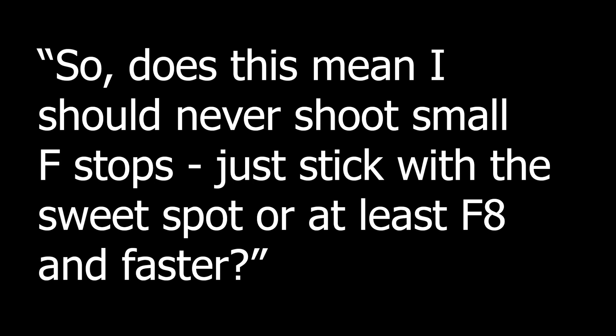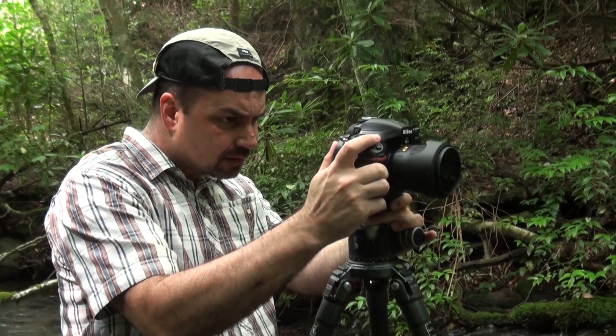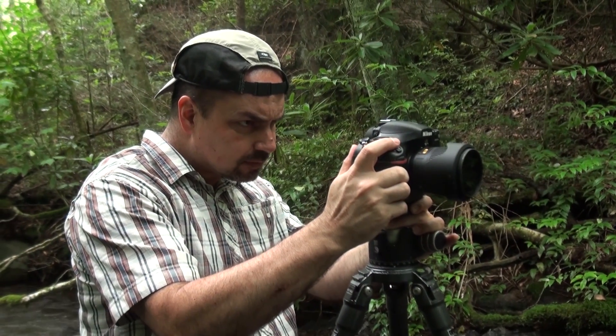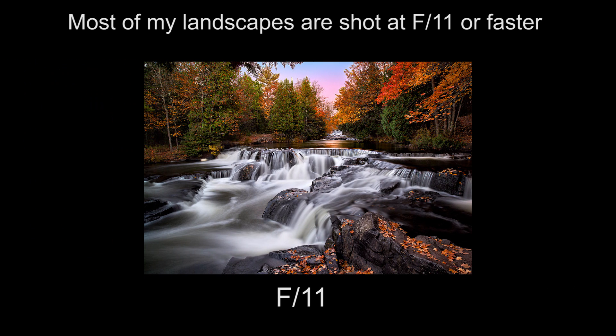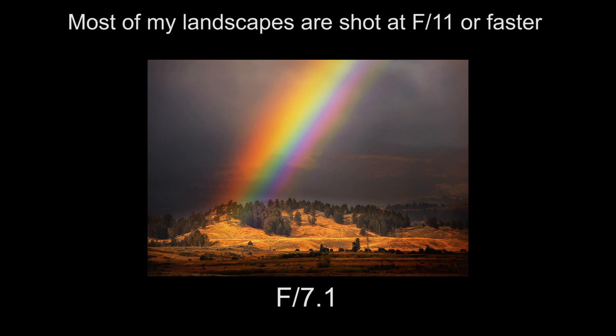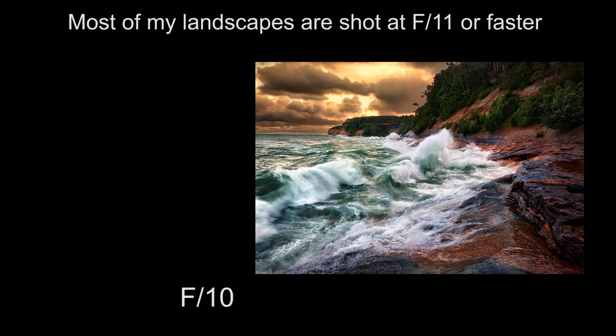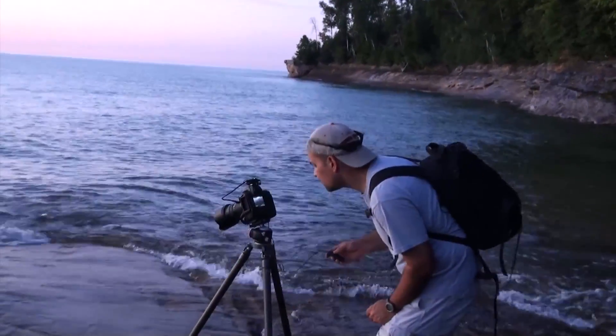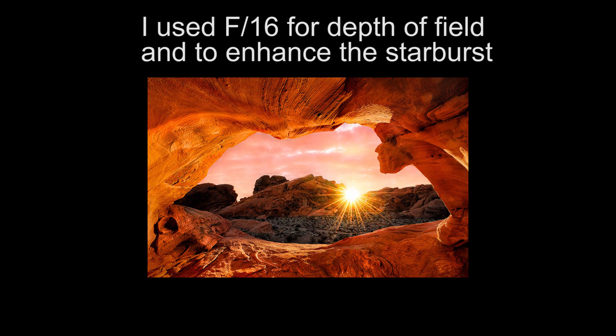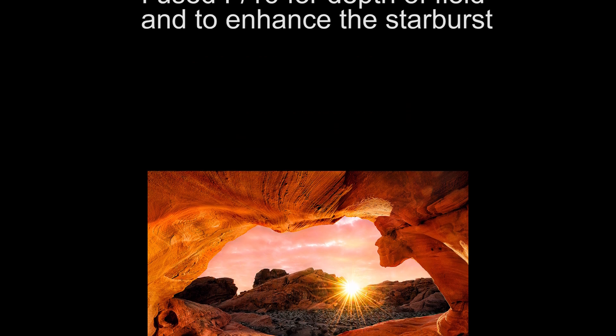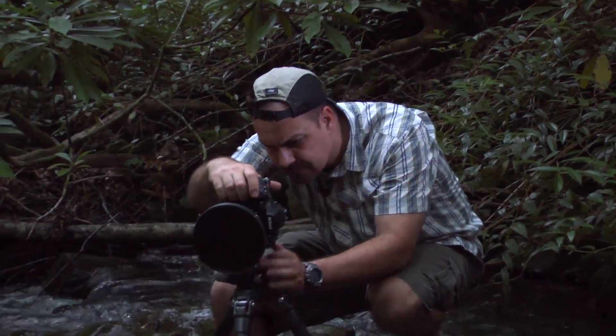Question 3: Does this mean I should never shoot small f-stops, just stick with the sweet spot or at least f/8 and faster? Absolutely not. What it does mean is you need to be aware of the consequences of stopping down. Landscape photographers are sometimes guilty of setting their lenses at f/16 or f/22 and just leaving it there even when it's not necessary. By understanding diffraction, you can look at a scene and decide if maybe you can get away with a faster f-stop. If the photo needs the depth of field you get with f/16 to pull it off, then you really need to use f/16. In the end, you need to strike a balance between depth of field and the amount of diffraction you're willing to tolerate for a particular image.